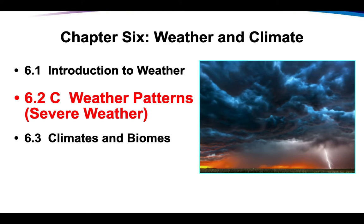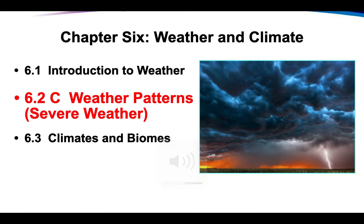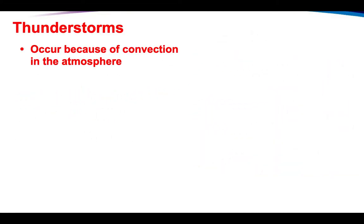We are finally going to finish up Chapter 6, Section 2, all about severe weather. Earth has some really violent, severe weather patterns that can happen if conditions are just right. So we are going to be talking about those today. First of all, this is one that is very common for us: thunderstorms.